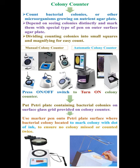Colonies are seen distinctly and marked with a special type of pen on the outer surface of the agar plate, by dividing the counting colonies into small squares and magnifying for easy count.